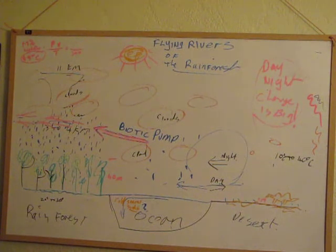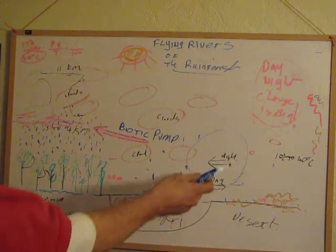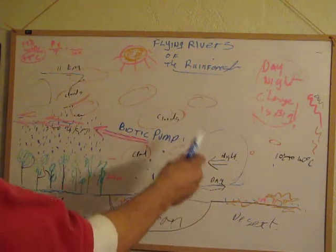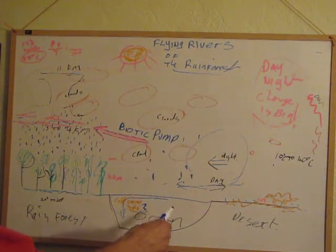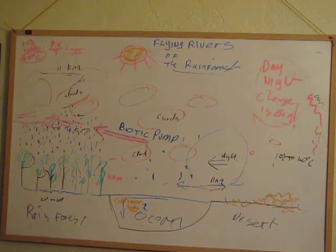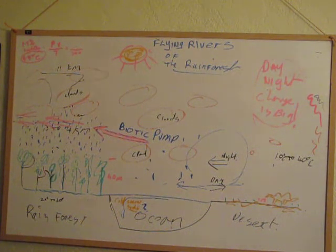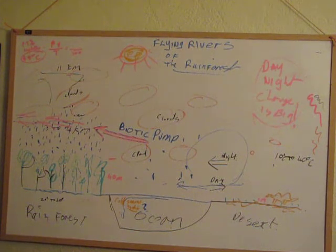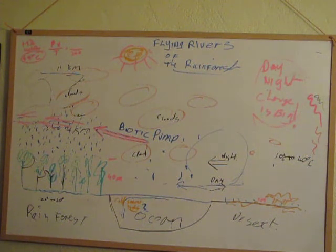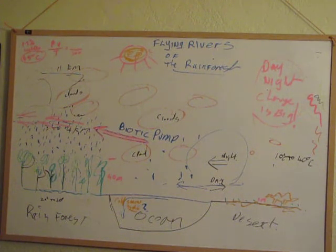On land, the biggest difference is water vapour. Over the ocean there's generally low pressure because there's moisture from the ocean in the air. Water vapour has a molecular weight of 18, whereas dry air has a molecular weight of 29, and that's a significant difference. So you add water vapour to air and it makes the air lighter.